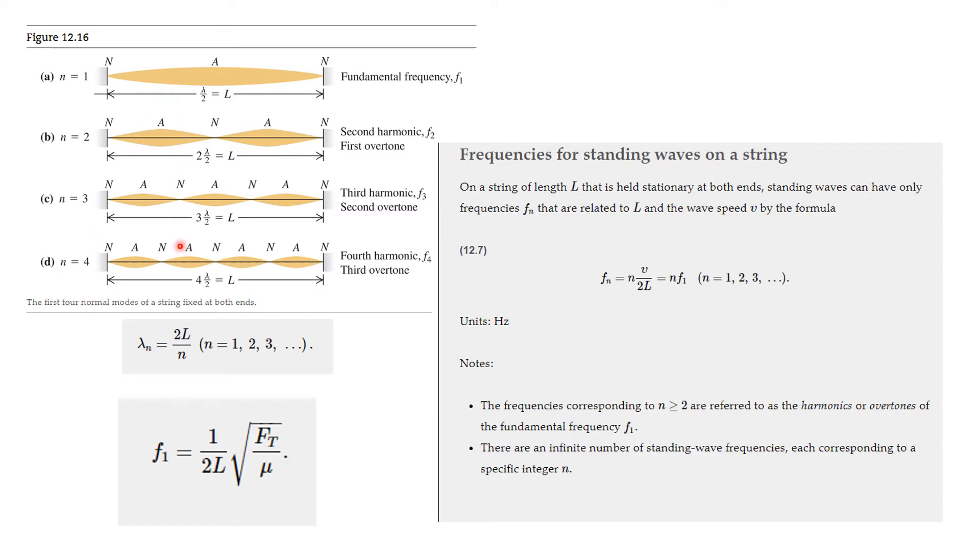We have equations for these frequencies. The first frequency, F1, is given by 1 over 2L times the square root of the tension in the string, Ft, divided by mu, the mass. We also have an expression for the wavelength: lambda_n is 2L over n. As n gets bigger, lambda gets shorter, meaning the frequency is higher.